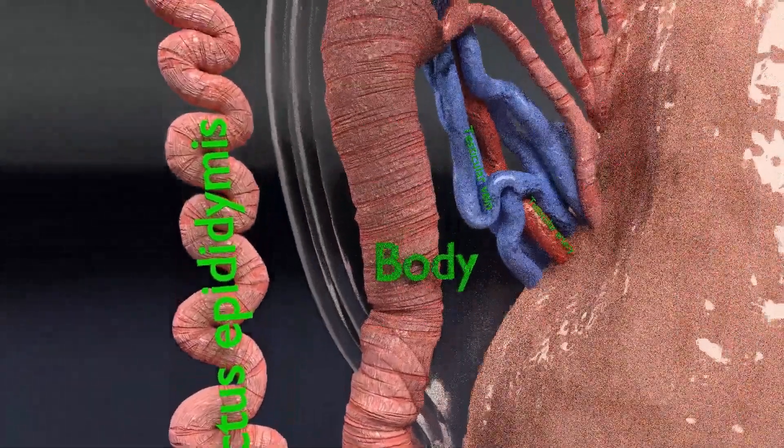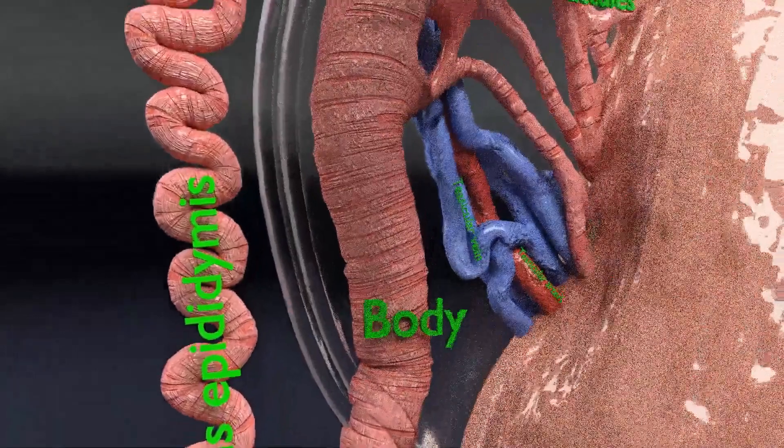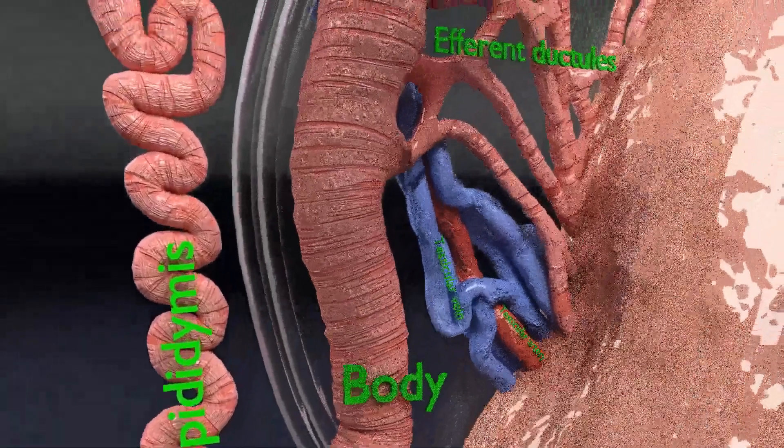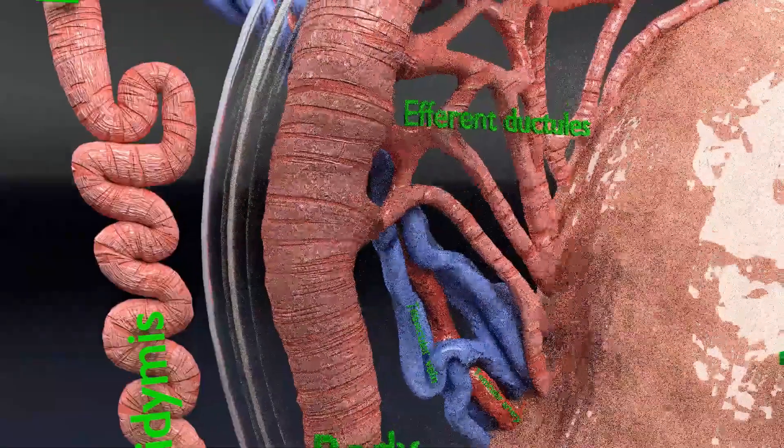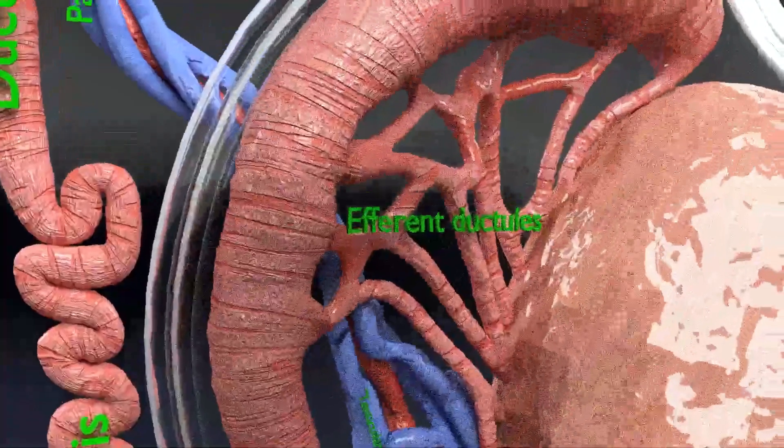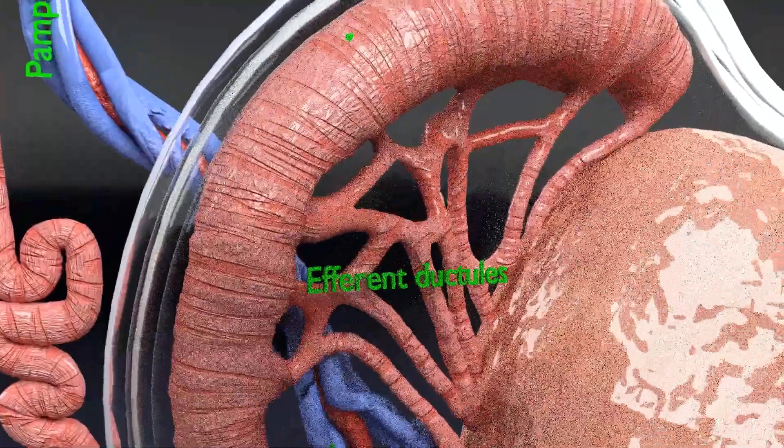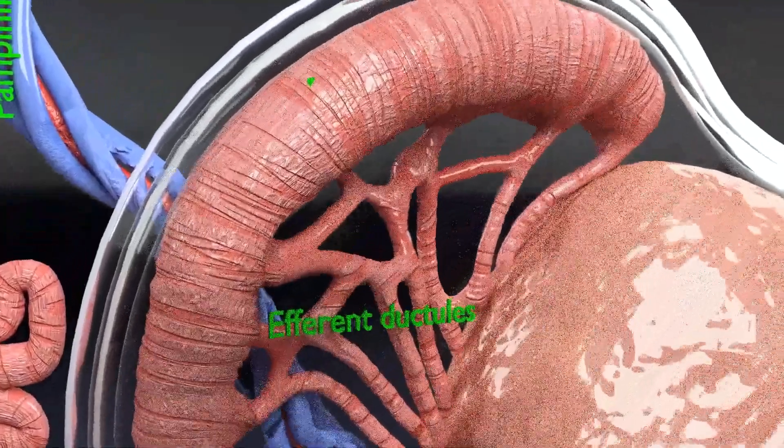The tail is the lower smaller part of the epididymis. The body is a narrow and middle portion of the epididymis. The ductus epididymis continues to ductus deferens.